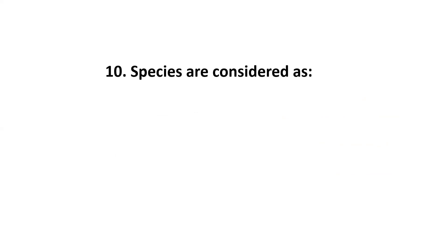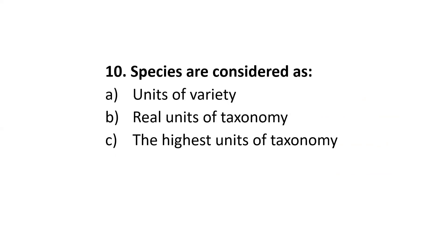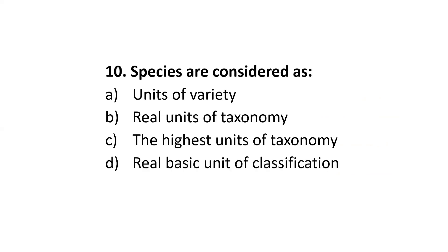Next — a basic yet confusing one: species are considered as — units of variety, real units of taxonomy, the highest units of taxonomy, or the real basic unit of classification? The correct option is option D: real basic unit of classification.